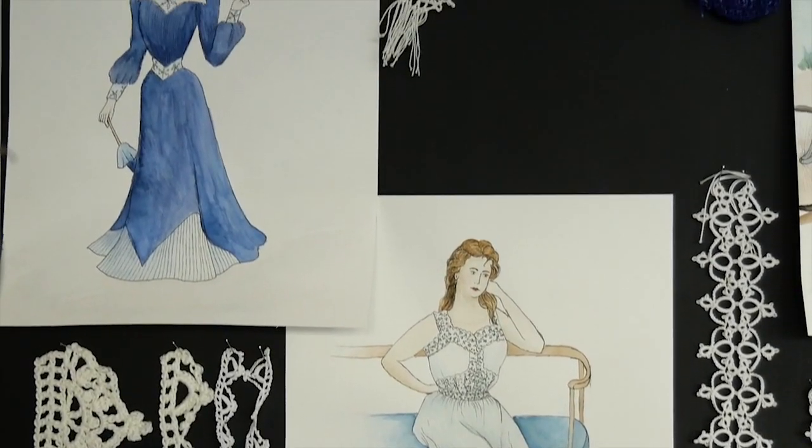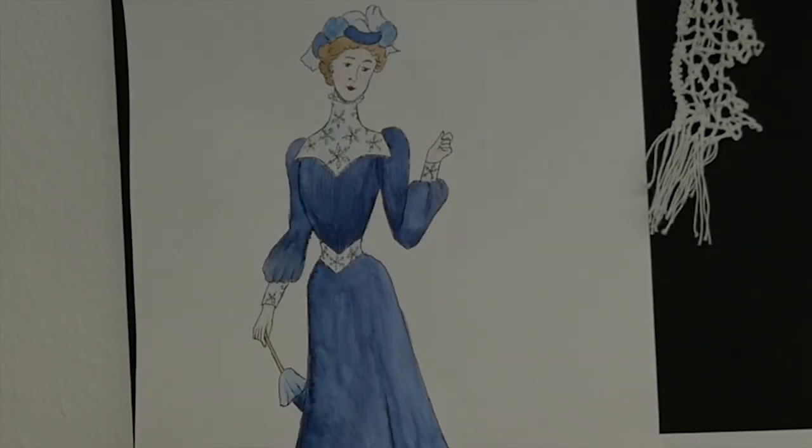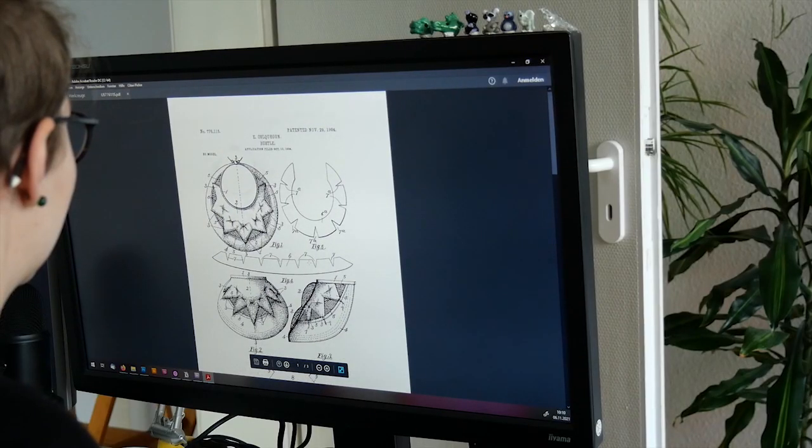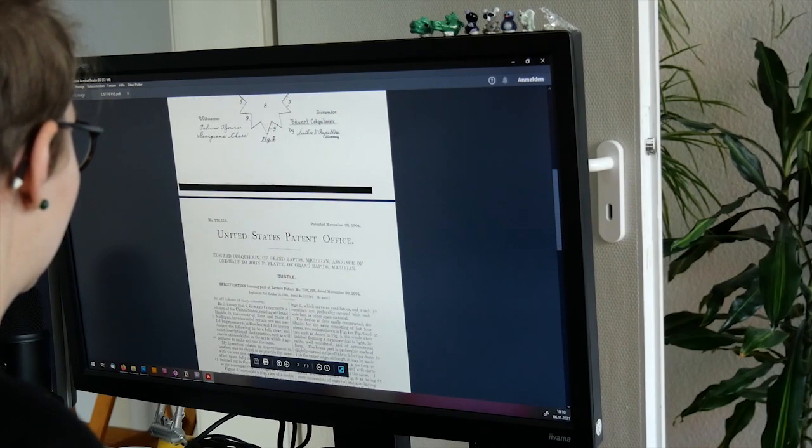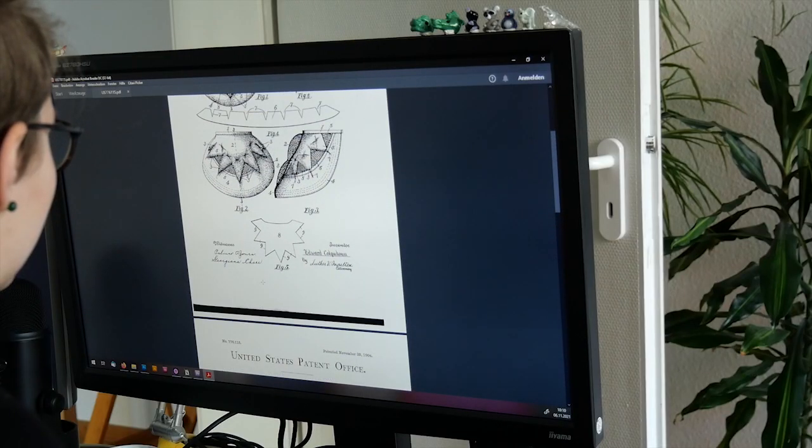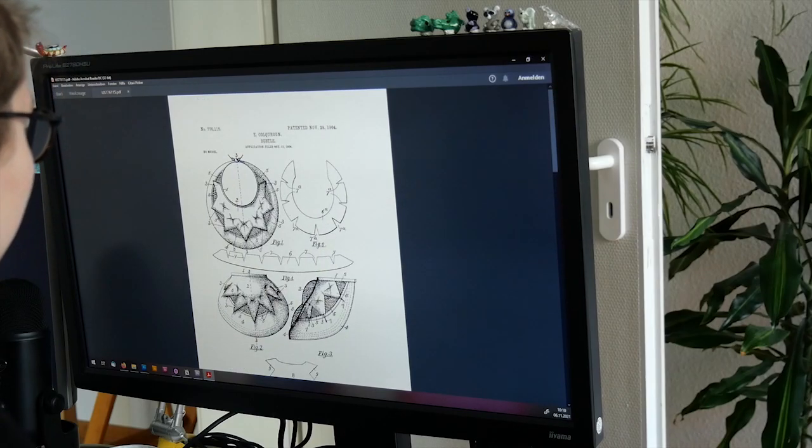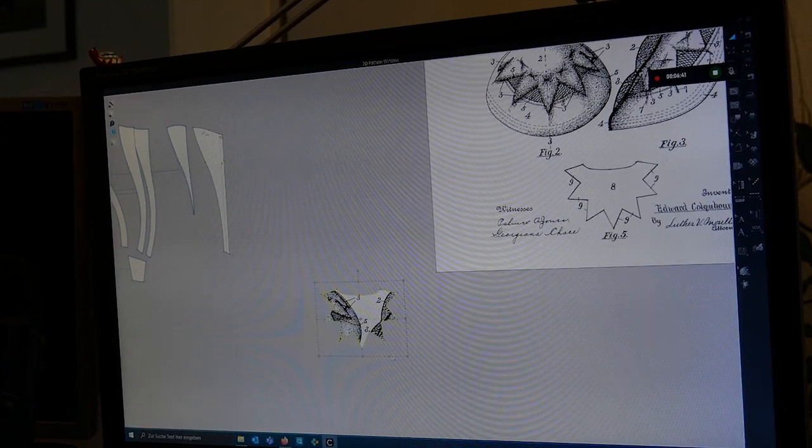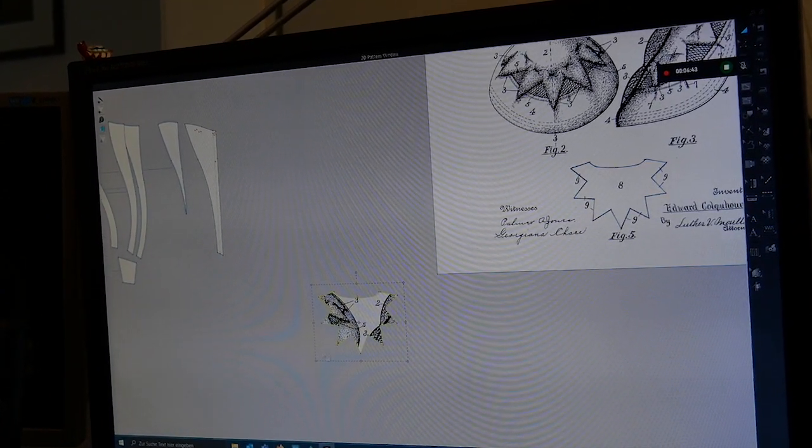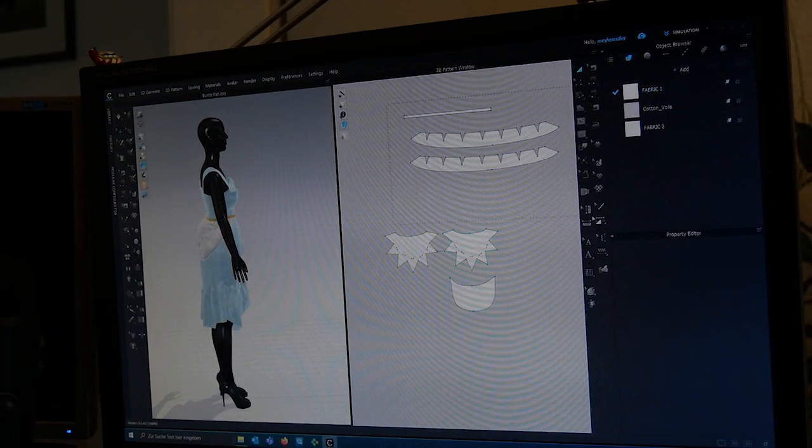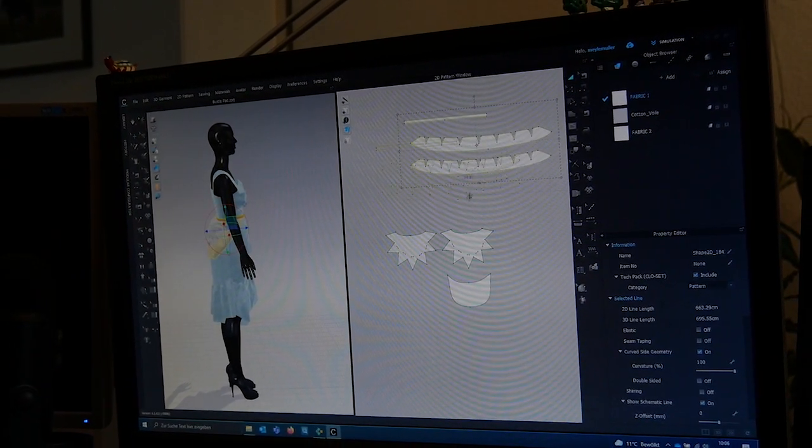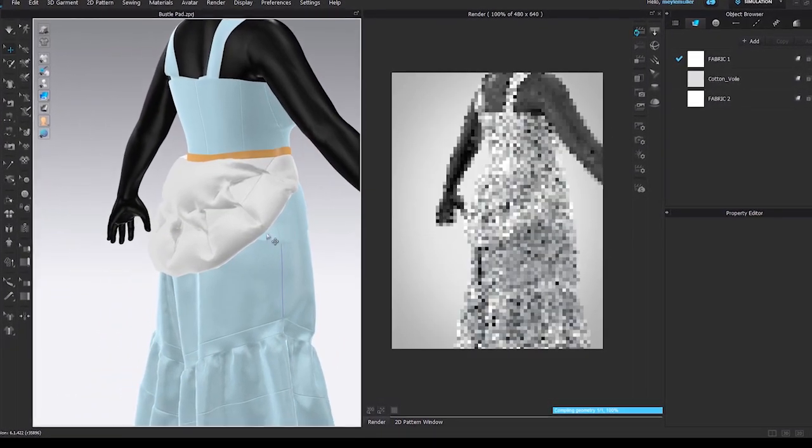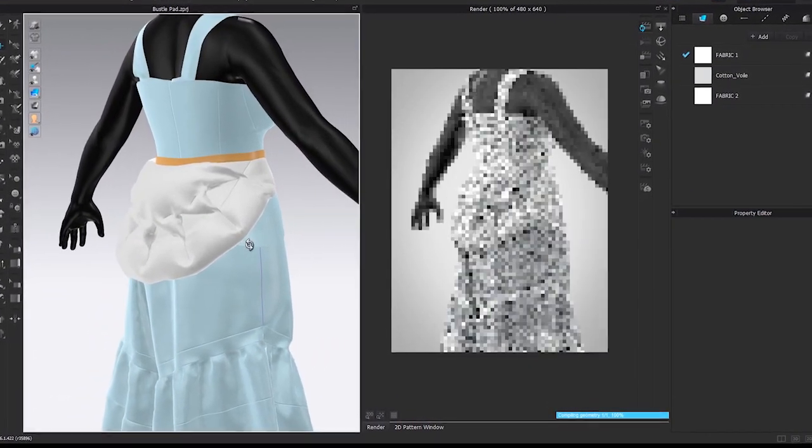A project I'm still working on is the Snow Queen gown, and now I wanted to focus on the hip pad to get this typical shape at the waistline. I found a pattern from 1903 and really liked the star shape. I thought it would fit really good to the theme of the whole gown. So I recreated it in Clos 3D, drew the pattern, and had a look if it might fit.